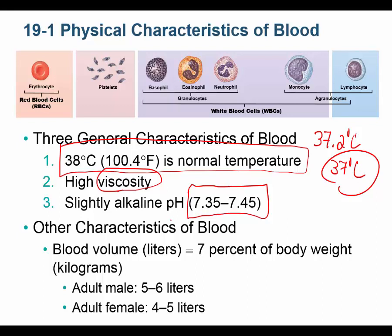The normal body pH range is 7.35–7.45. Anything below 7.35 is called acidosis — it's not truly acidic (not below 7.0), but it is below our normal body pH range, so it's termed acidosis. We'll discuss pH in more detail later.